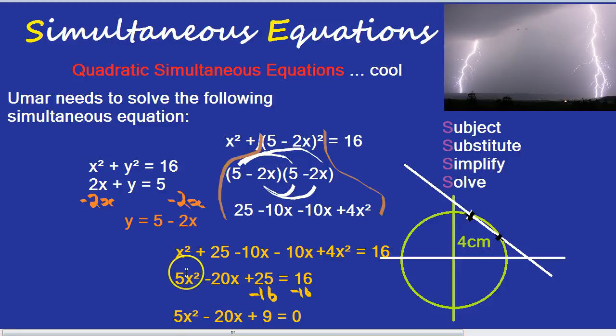So how would I solve this? I'd do a quick check to see if it can factorize. And the way I do that is 5 times 9 is 45. Anything that can multiply to get 45. 15 and 3 doesn't get 20. 9 and 5 doesn't get 20. So no, it doesn't factorize. And so I'm going to use the formula.